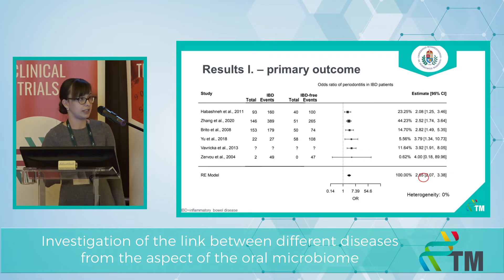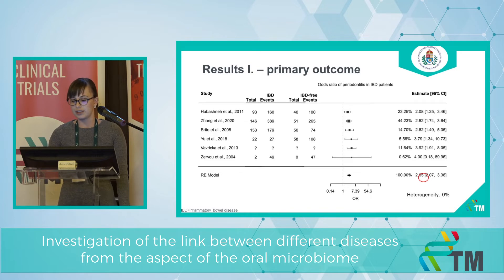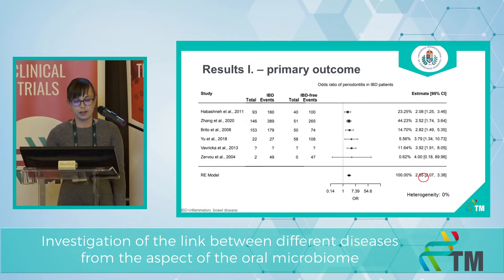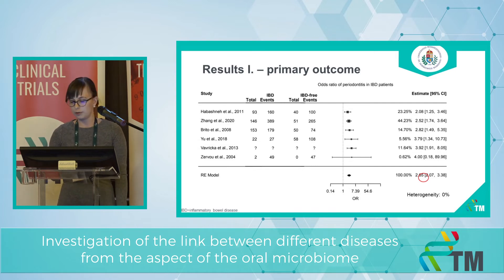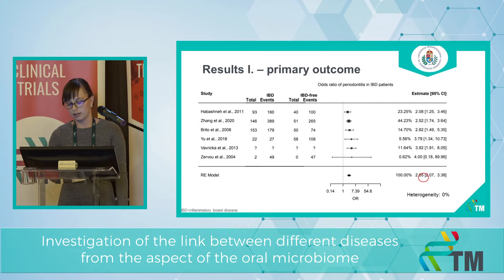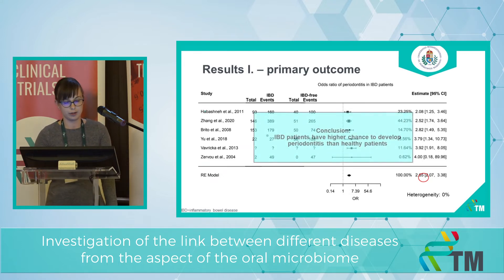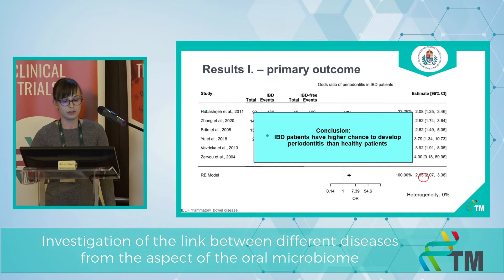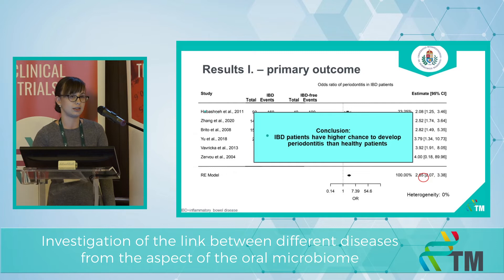The heterogeneity was 0%, which means the population was quite homogeneous. This 2.65 odds ratio value means that if in healthy patients the odds for developing periodontitis is 1, then it is 2.65 in the IBD population — meaning the odds for developing periodontitis is 2.65 times higher than in the healthy population. The conclusion is that IBD patients have a higher chance to develop periodontitis than healthy patients.